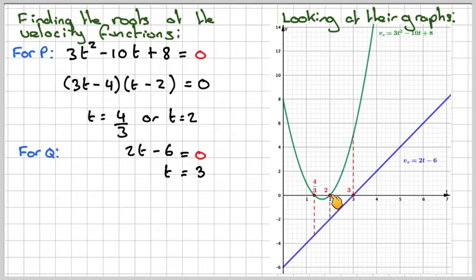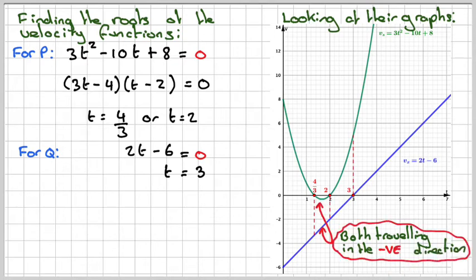But look, between here and here, between 4 over 3 and 2, the velocity will both be negative. So that means they are moving in the same direction for this part of their journey. And also here, the velocity graphs are both positive. That means they're also moving in the same direction. So between here, 4 over 3 and t equals 2, they're both traveling in the negative direction.